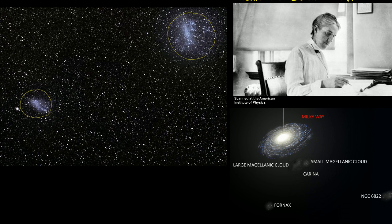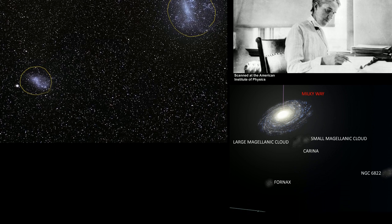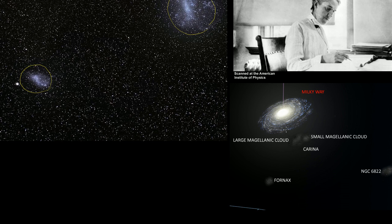And just to get a sense of where they are relative to our galaxy, the Milky Way galaxy. This is obviously not an actual picture. We can't take a picture from this vantage point. This would have to be very far away. But this is the Milky Way right here, and this is the Small Magellanic Cloud, and this is the Large Magellanic Cloud. Her job was literally just to classify the different stars that she saw.